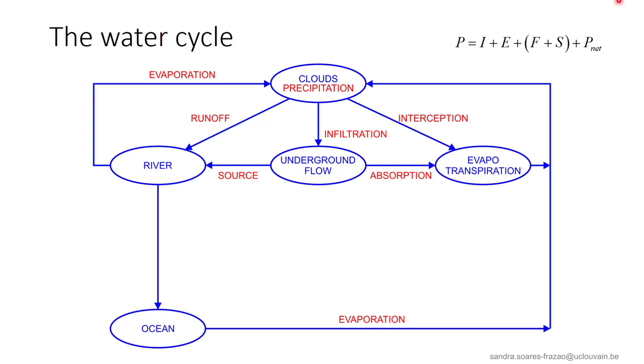The balance is summarized by this equation, where P is the total precipitation, I the interception by vegetation, E the evaporation, F plus S the storage in depressions and by infiltration, and P net is the net rain, that is the quantity of rainwater that will produce direct runoff and thus a direct discharge.